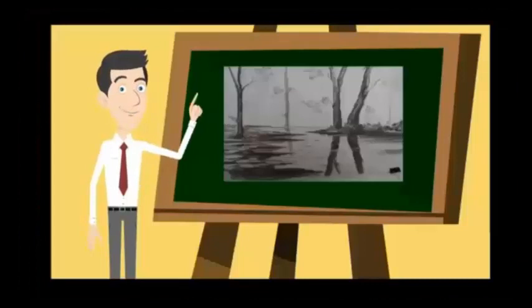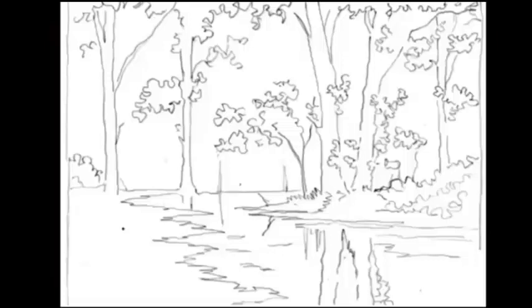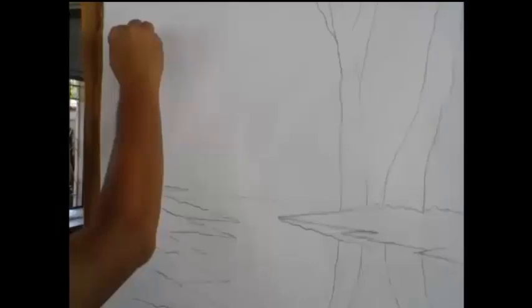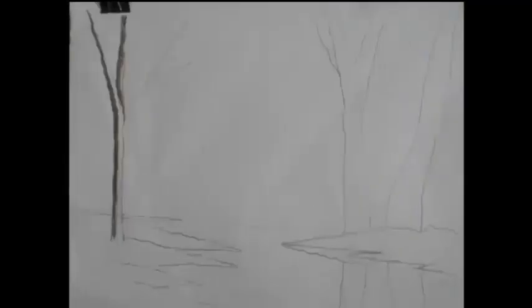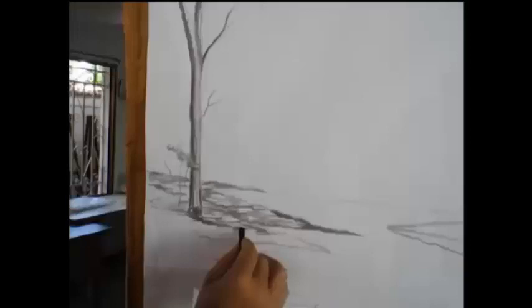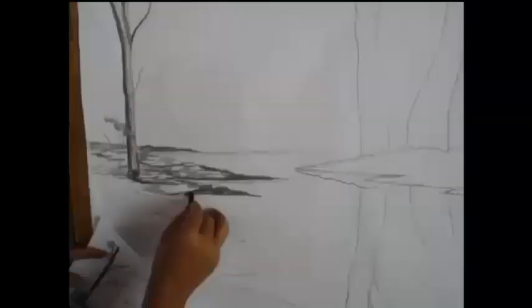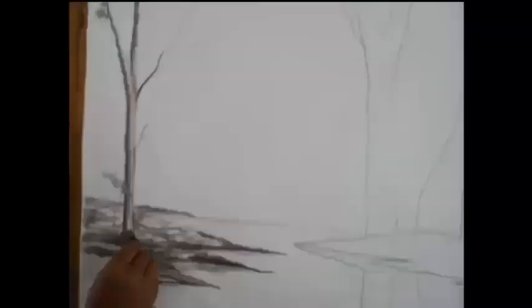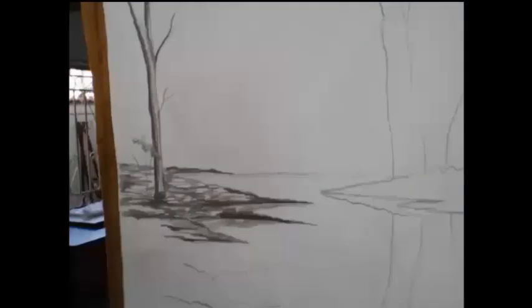En la segunda parte, dibujar una laguna con paisaje. Este es nuestro boceto. Aquí comienza dibujando los árboles del paisaje, el suelo que forma la orilla. Escuchemos las siguientes explicaciones respecto a la posición de los objetos en el dibujo.